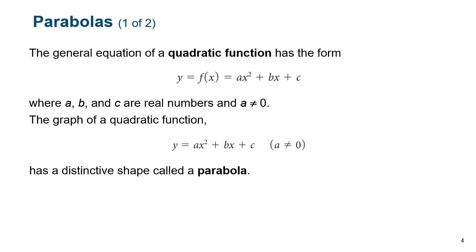So what is a parabola? It's this horseshoe-shaped function. It's the more commonly used name of a quadratic function, which is any function of the form ax squared plus bx plus c, where a, b, and c are constants. A cannot be zero, because if a is zero, you're just left with bx plus c, which is just a straight line. To graph this function, you either need to use a graphing utility or you need to know some basics about how these letters influence how it looks.